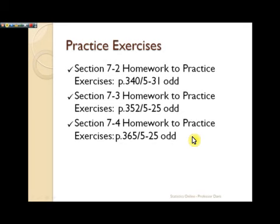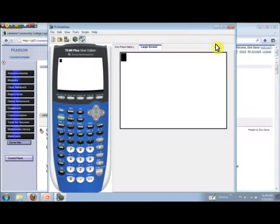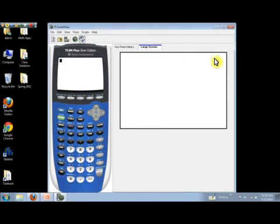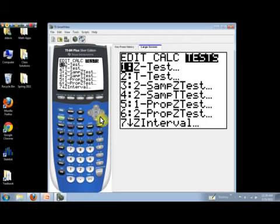Now, allow me to take a minute to just talk about how we can use the calculator to help us get these confidence intervals. So, what we want to do is just hit the stat button, go over to tests, and then scroll down here. Now, our first stop will be right here, option 7 on my TI-84. That's Z-interval.